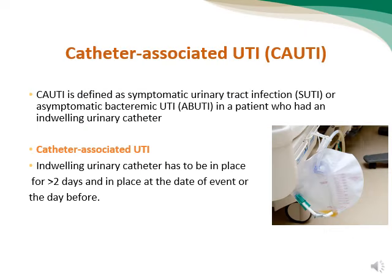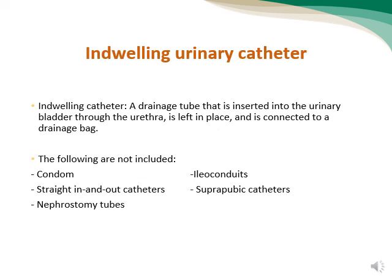KAUTI refers to symptomatic urinary tract infection or asymptomatic bacteriemic urinary tract infection in a patient who had an indwelling urinary catheter. This type of catheter has to be in place for at least three days and in place at the date of event or the day before. An indwelling catheter is a drainage tube inserted into the urinary bladder through the urethra, left in place and connected to a drainage bag. These devices are also called Foley catheters.